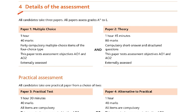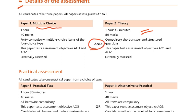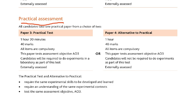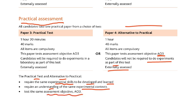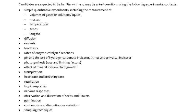This is Section 4 — the details of the assessment. Paper 1 will be multiple choice. The theory paper, which was for 80 marks and 1 hour 45 minutes, you have just taken. In the practical assessment, it says either you do Paper 3 or Paper 4, the alternative to practical. This paper tests assessment objective AO3; candidates will not be required to do experiments and it is externally assessed. Both the practical test and the alternative to practical require the same experimental skills and test the same assessment objectives AO3.